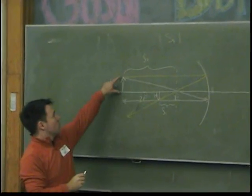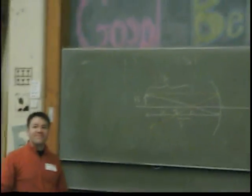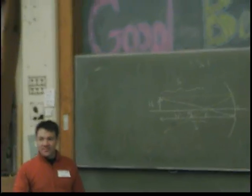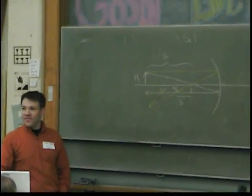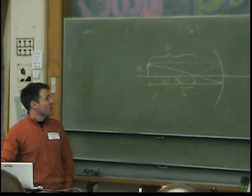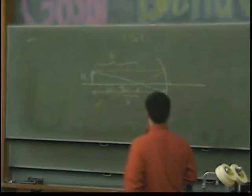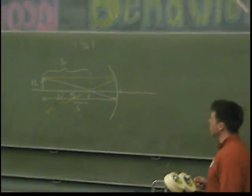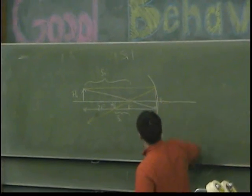HO is the height of the object — or, the lady of the night. And HI is the height of the image. All right. And then we tell the students we have to make a flat mirror approximation, that this is approximately reflected.